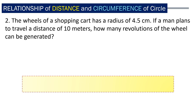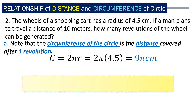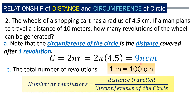Let us have the next example. The wheel of a shopping cart has a radius of 4.5 centimeters. If a man plans to travel a distance of 10 meters, how many revolutions of the wheel can be generated? The circumference is 2π times 4.5, which gives us 9π centimeters. The total number of revolutions can be solved, but we need to convert meters into centimeters. Since 9π centimeters represents the distance after one revolution and we are traveling 10 meters, we divide the total distance by the circumference to find the number of revolutions.